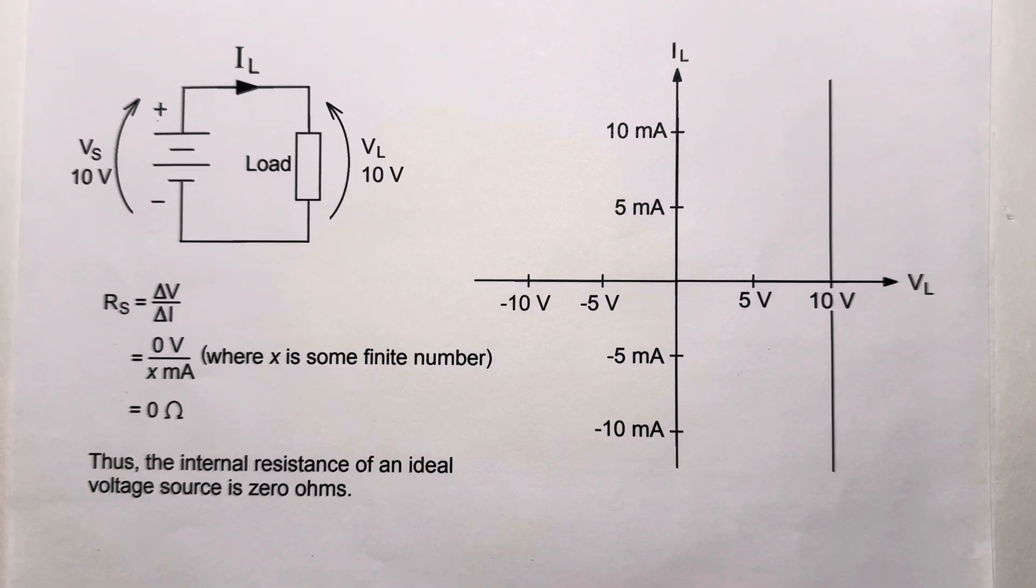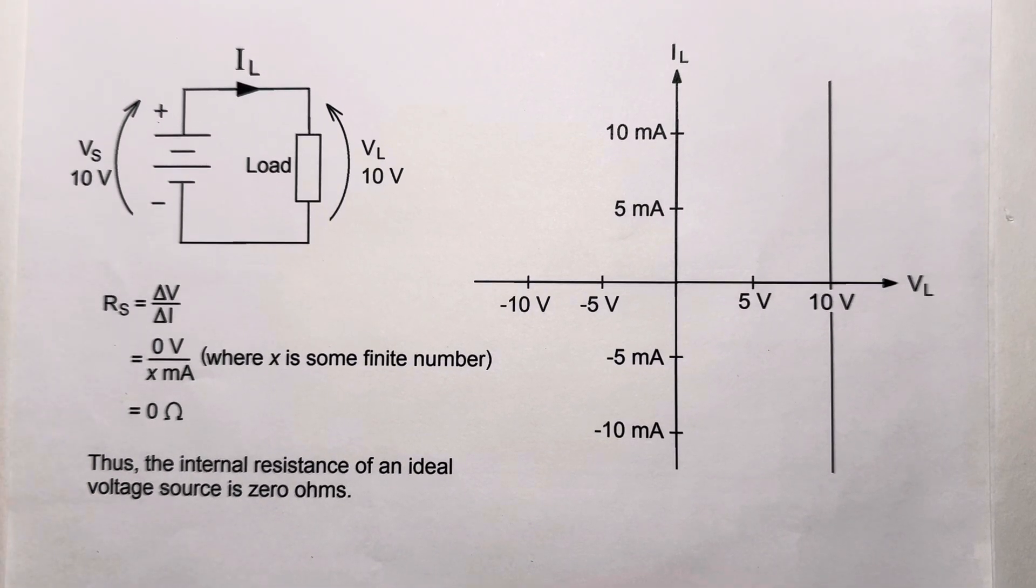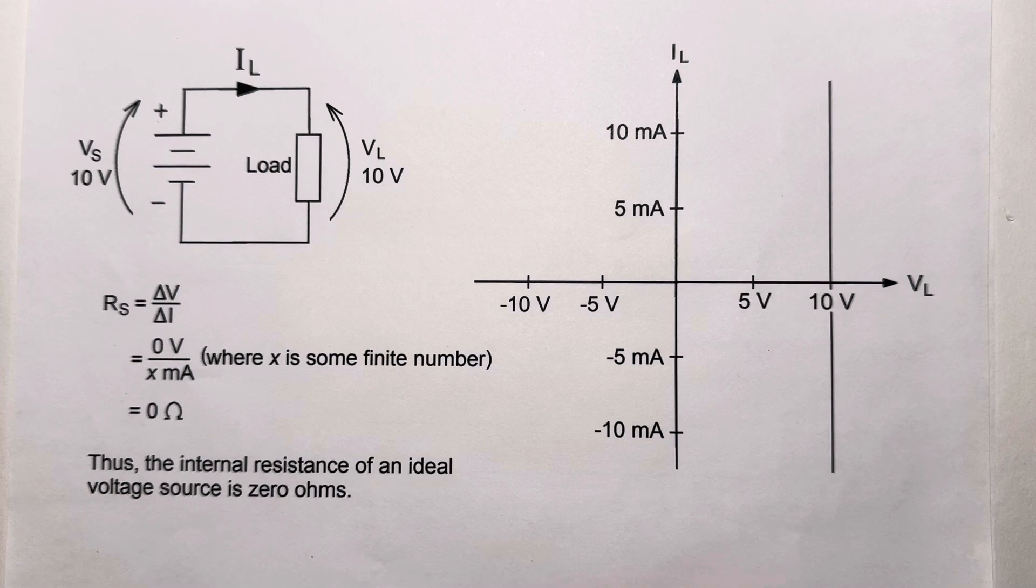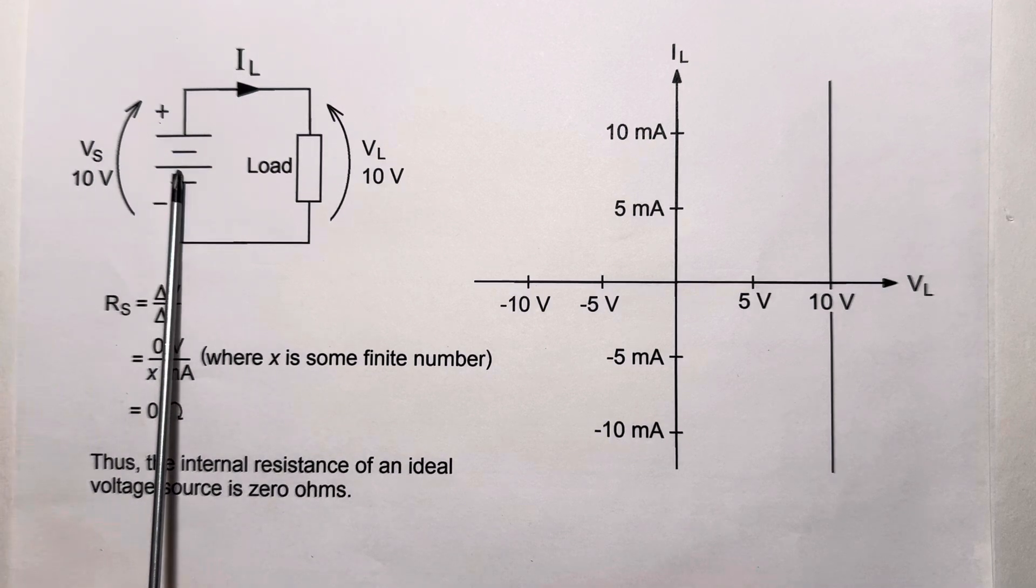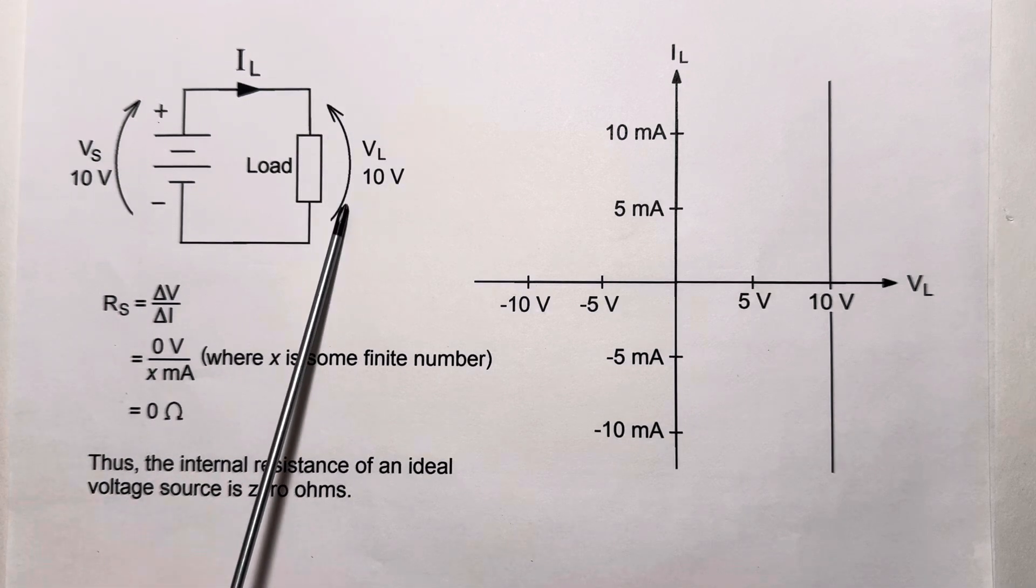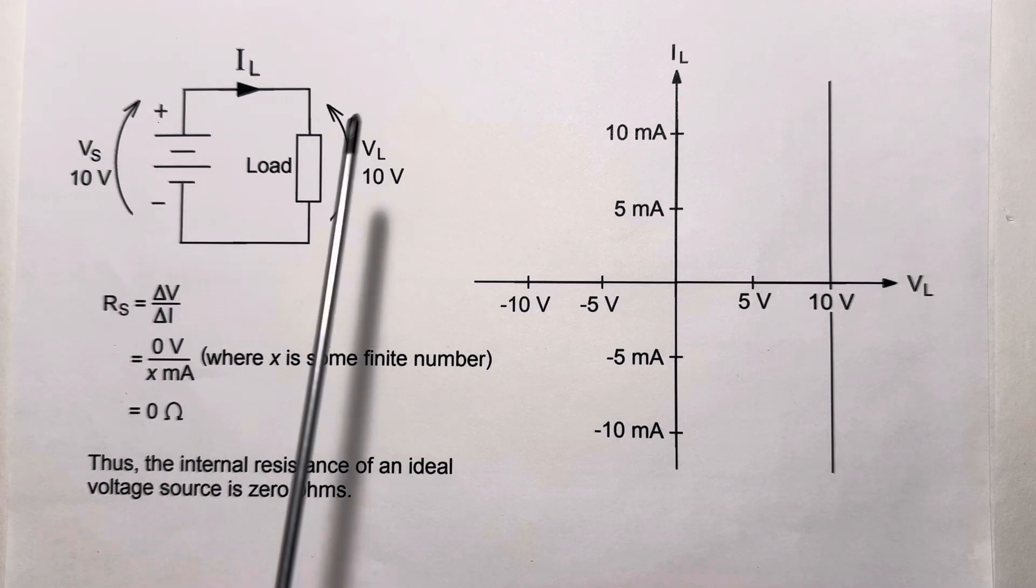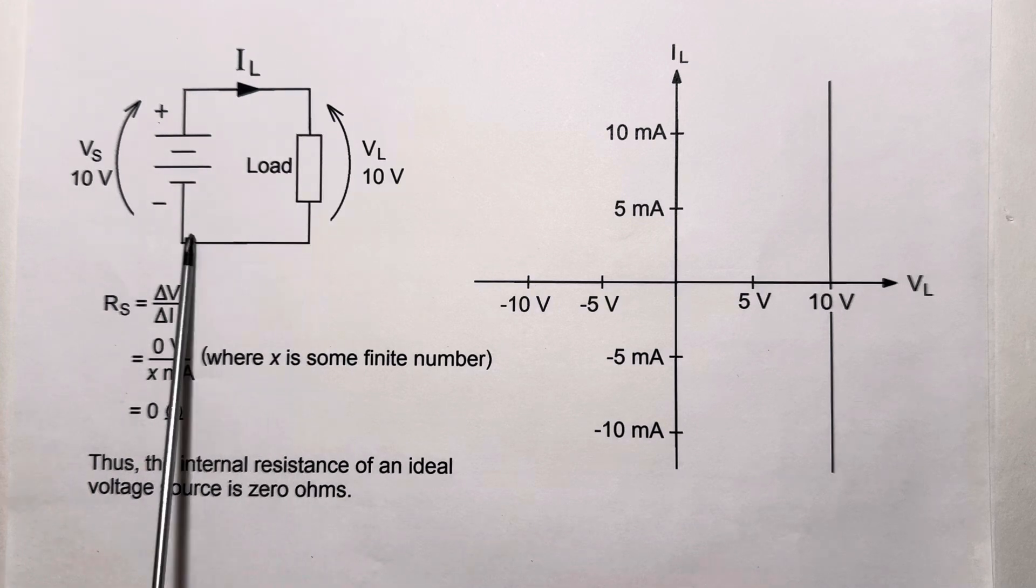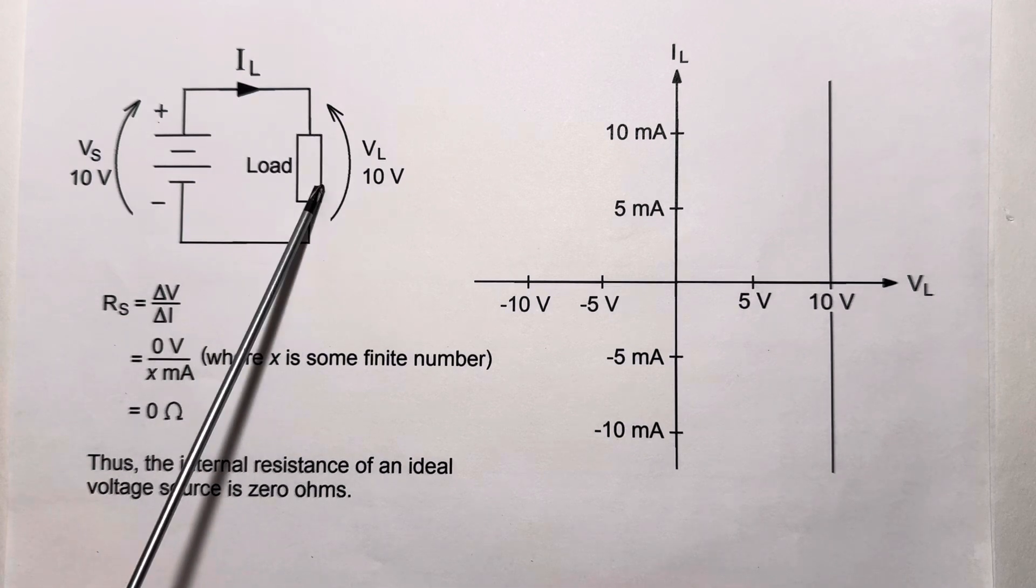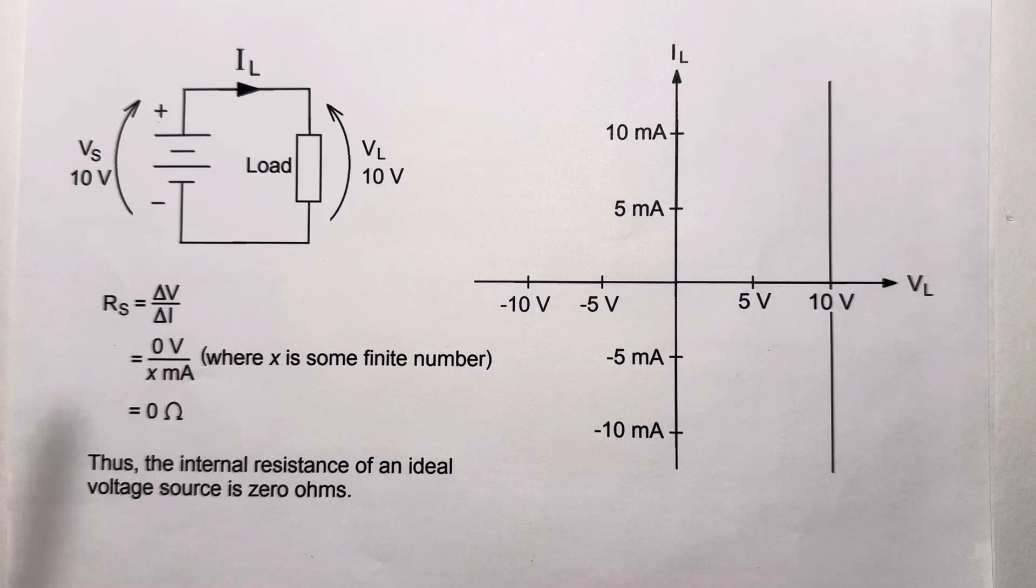Here is an ideal voltage source represented with the symbol for a battery connected to some load. Now, the load could be anything. It could be a resistor, a light bulb, a television set, whatever. It doesn't matter. But because this is an ideal voltage source, whatever its terminal voltage is, that is the voltage we get across this load. And we get some resulting current flow through the circuit. The current flow depends on the resistance of the load, and it can be any value.